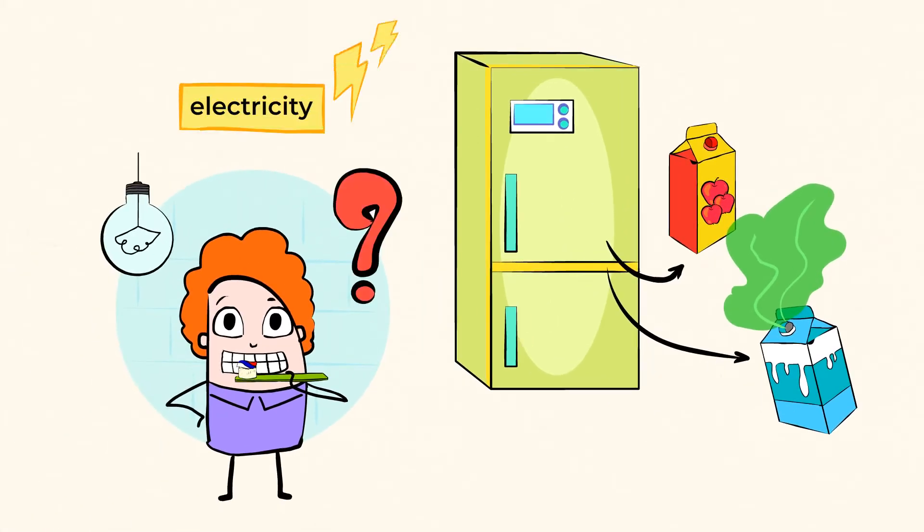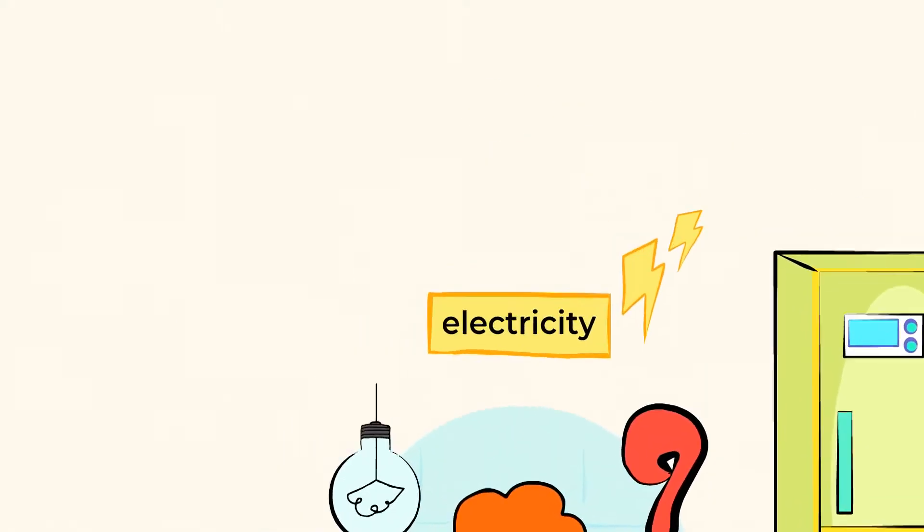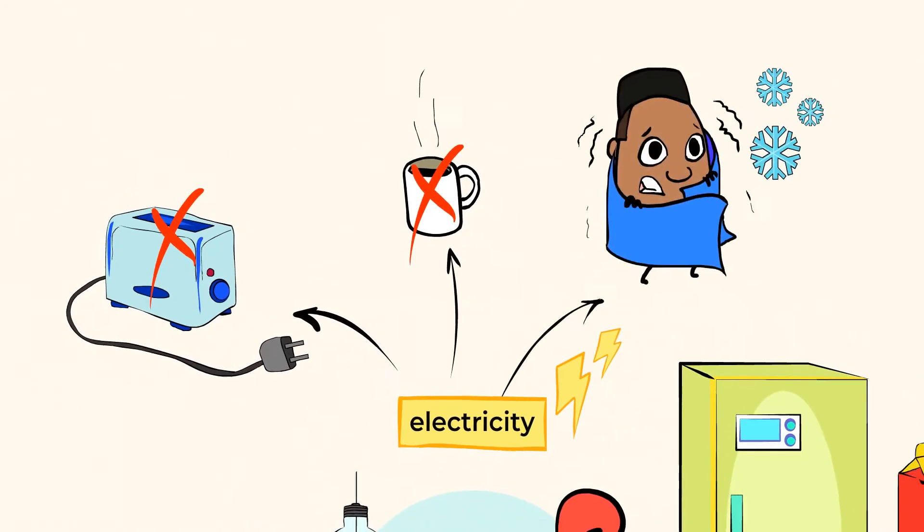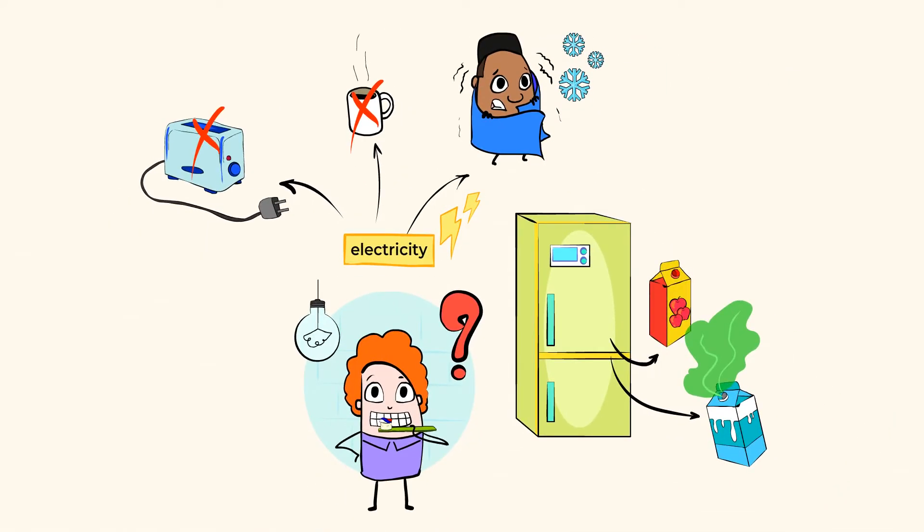What other ways do you depend on electricity in your daily life? You can't make toast for breakfast, and your parents can't make coffee, and then they're super grumpy. From preparing food to keeping the house warm to using a variety of appliances, there are so many ways that electricity is a part of our lives.